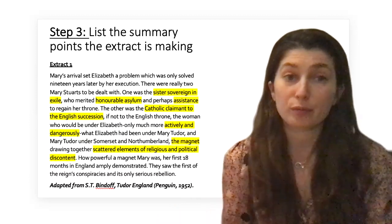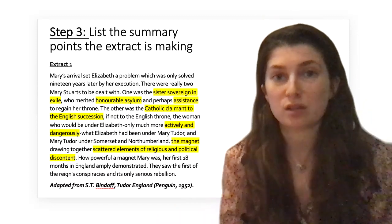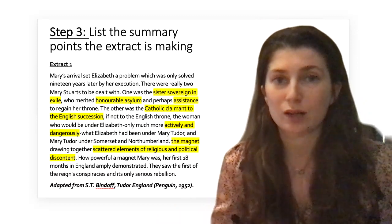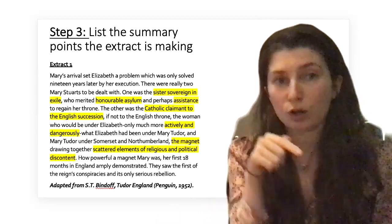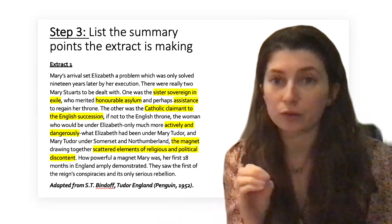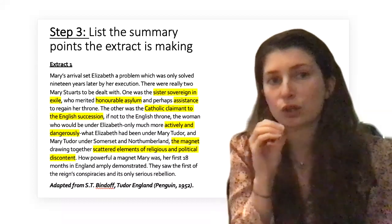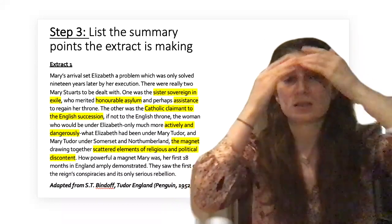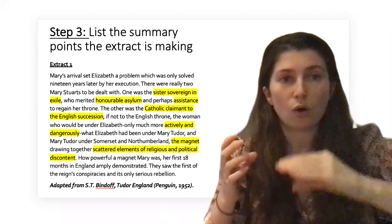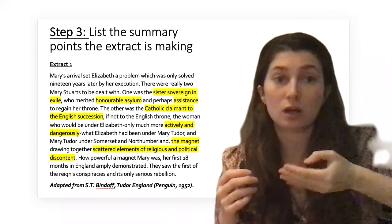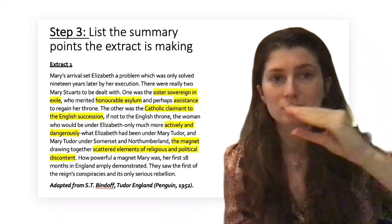Step three: we've worked out the overall theme of the argument, but we need to develop the sub-points that Bindoff is making throughout the extract. Think about each stage of highlighting—go back to it and work out for each one what is the sub-point, the intricate detailed comment he's making. Imagine it's like a 25 mark essay with your overall argument, but each paragraph builds on the argument to reach the conclusion. Work out what are his points within it.